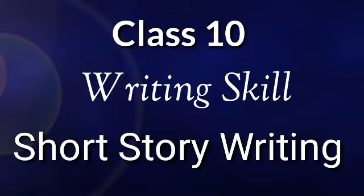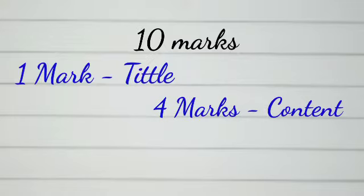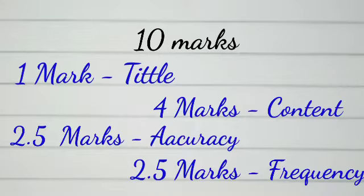Hello students! Today we will discuss the very important question of writing skill, that is short story writing. I would like to tell you why it is important to attempt this question. The weightage of this question is 10 marks. The distribution is: 1 mark for title, 4 marks for content, 2.5 marks for accuracy, and 2.5 marks for fluency. There is no right or wrong answer — it is based on creativity. If your grammar is correct, there are no spelling mistakes, and you write a decent story in 200 to 250 words, you can score 9 out of 10. So please put a little effort on this question and do some practice.